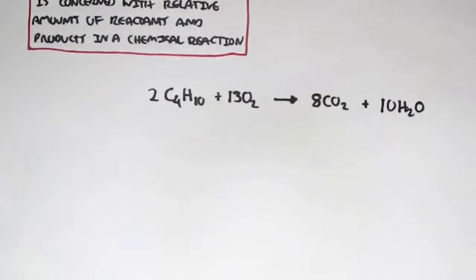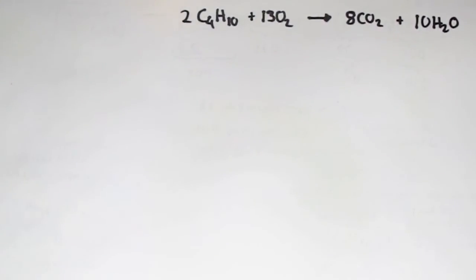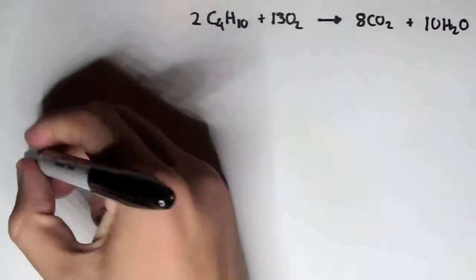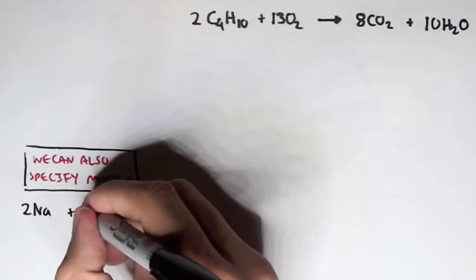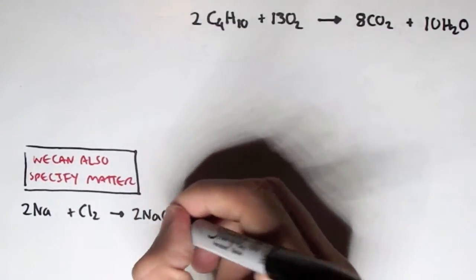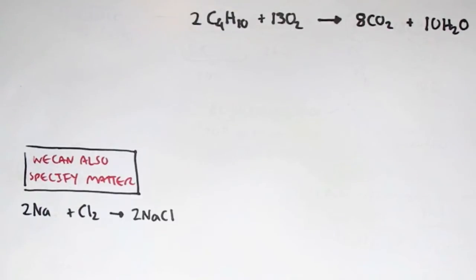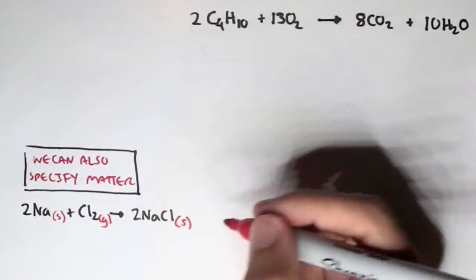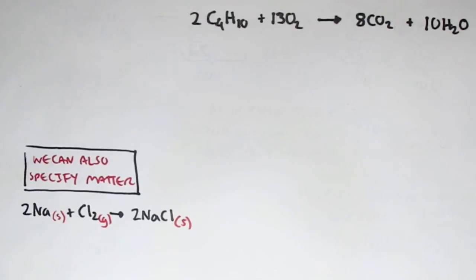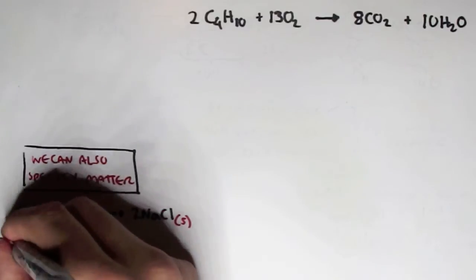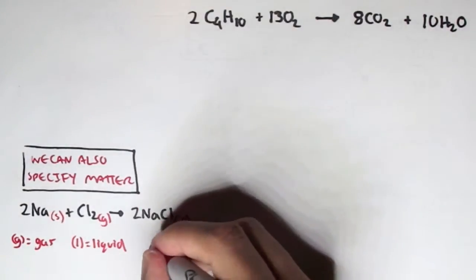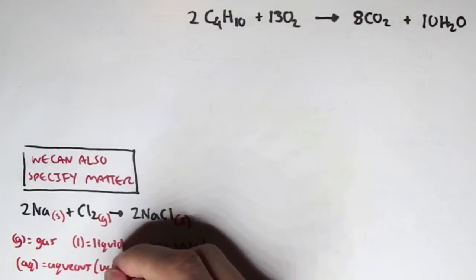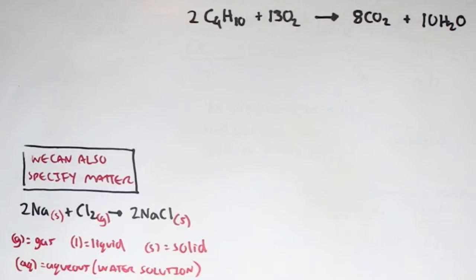We can also specify matter in a chemical equation. Looking at the first chemical reaction we had — two molecules of sodium plus chloride gas yielding two molecules of sodium chloride — we can specify the state of matter for each compound. Sodium is a solid, so we write S. Chloride gas is a gas, so we write G. Sodium chloride, the product, is also a solid, so we write S. G represents gas, L represents liquid, S represents solid, and AQ represents aqueous, which is essentially water or a solution the elements are in.